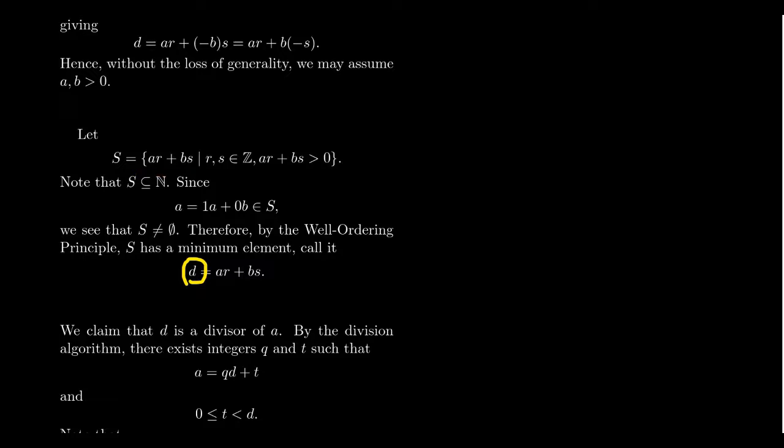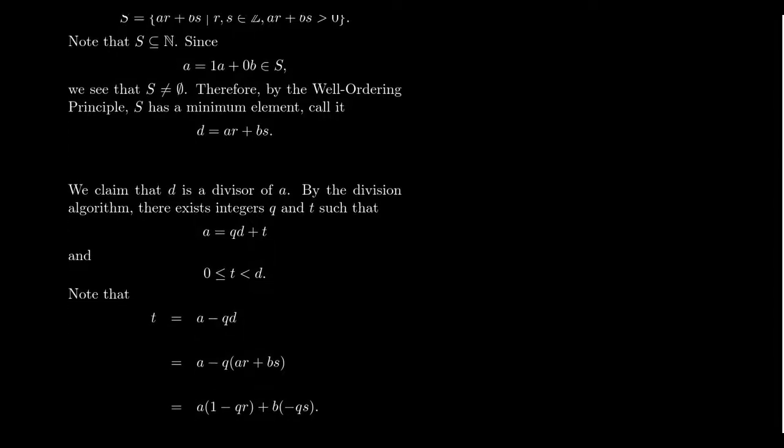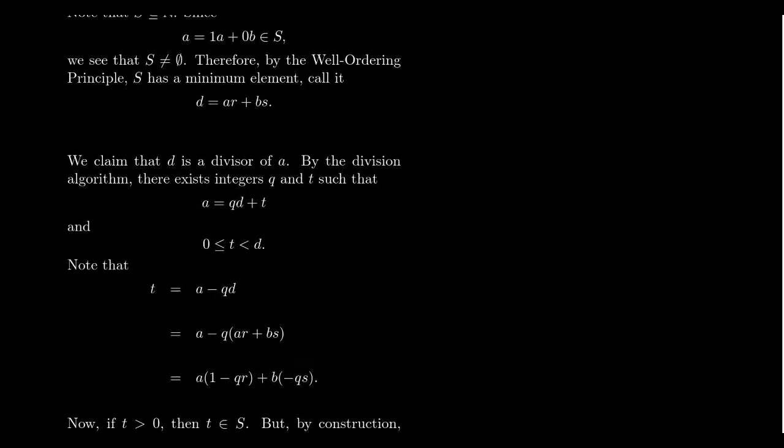Our goal is to show that this minimum element D is the greatest common divisor of A and B. In a well-ordering principle proof, we construct a set of natural numbers, show it's non-empty, invoke the principle to get a minimum element, and then argue the minimum element is what we're looking for. If we can show D equals GCD(A, B), then since D is expressible as a linear combination of A and B by construction, the theorem is proved. So we have to show D is the GCD. To be a GCD, it must first be a common divisor.